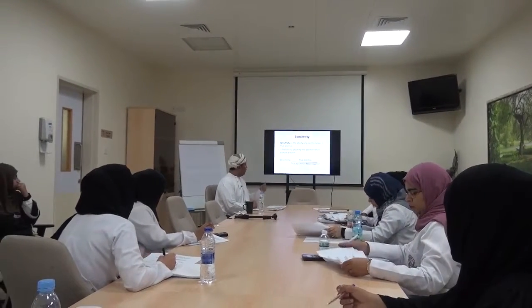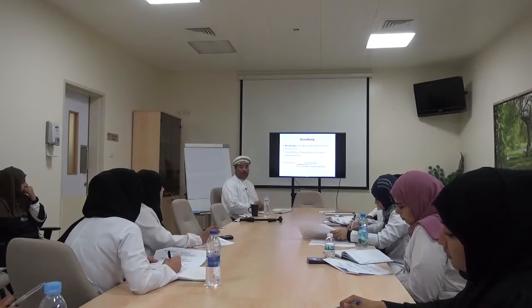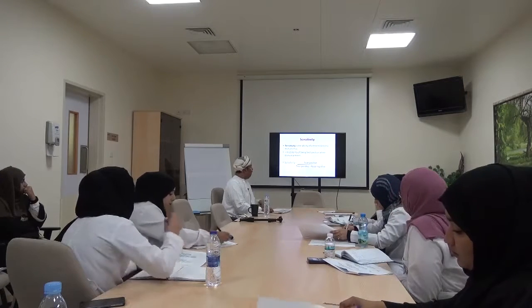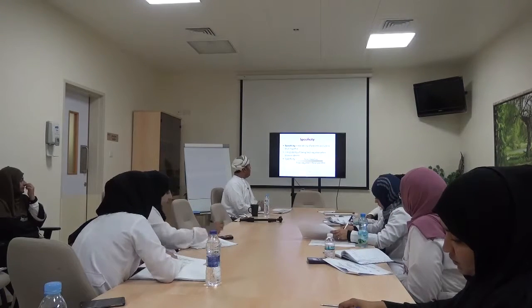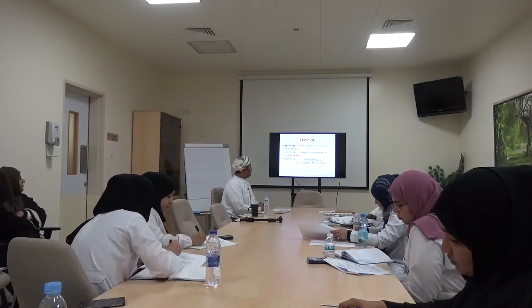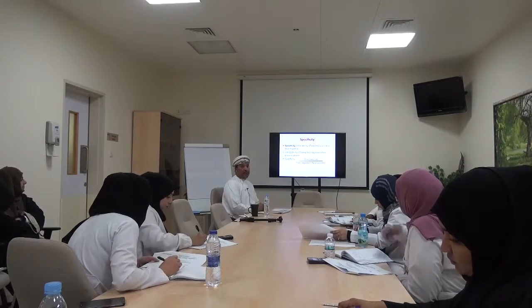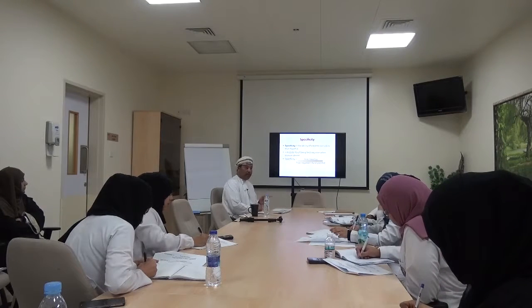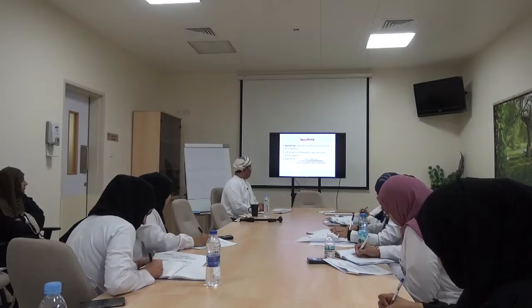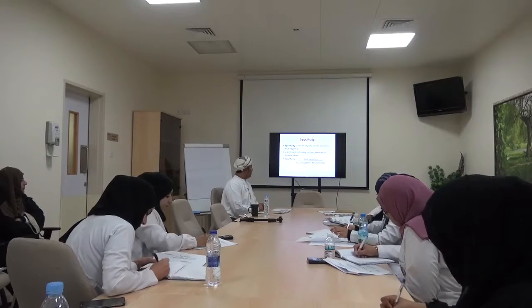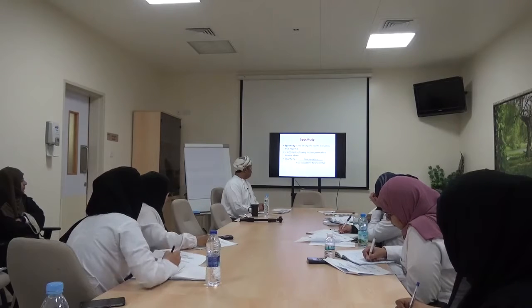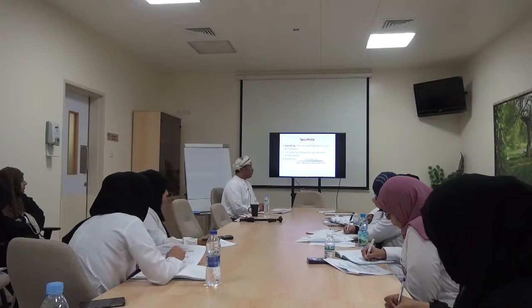False negatives are those who appear not to have the disease but actually have it. Specificity is the other side — the ability of the test to exclude true negatives and identify those who do not have the disease. Statistically, it is the probability of being test negative when disease is absent. The formula is: true negatives over true negatives plus false positives.